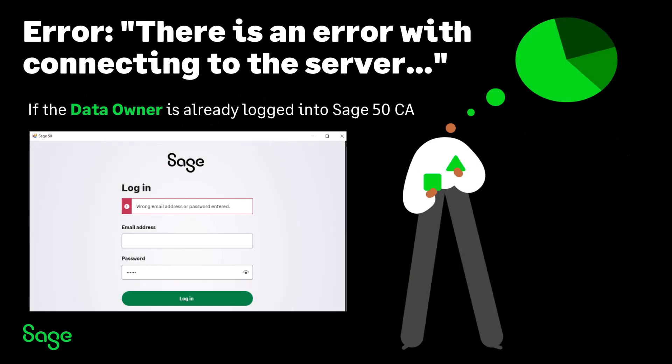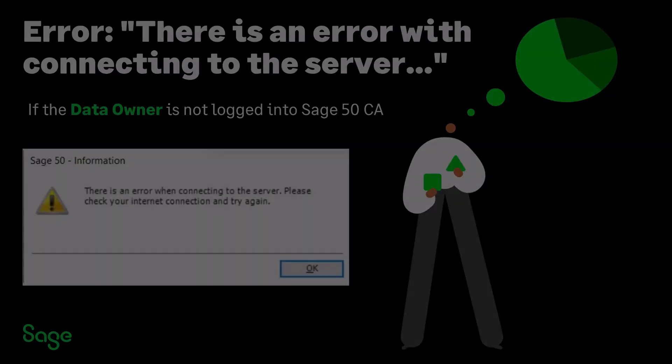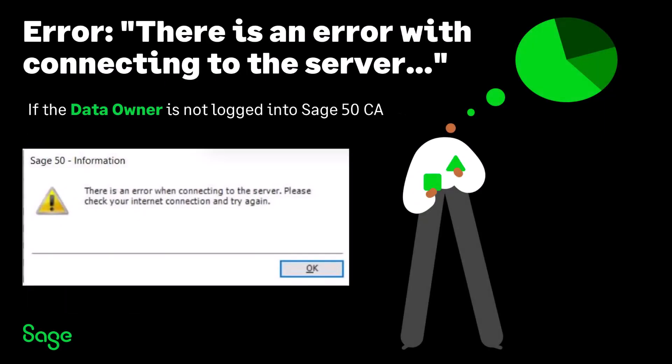If the data owner is already logged into Sage 50, the company will ask the data owner to verify their email address and their password for their Sage account. However, when the Sage account that's converting the company file is not the data owner, the user may receive the following error message during conversion.